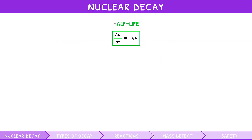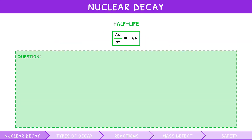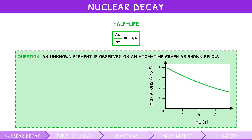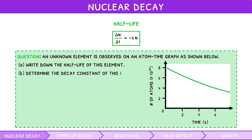Let's do a practice question to put this into context. An unknown element is observed on an atom-time graph as shown. Part A: write down the half-life of this element. Part B: determine the decay constant of this element. For Part A, we can see that the initial number of atoms is 8 × 10³⁰. Half of this is 4 × 10³⁰. Drawing a line to the graph and then down to the x-axis shows that the half-life is 6 hours.